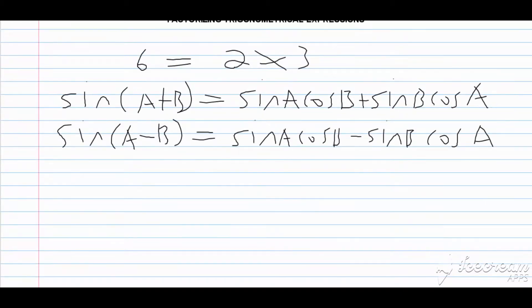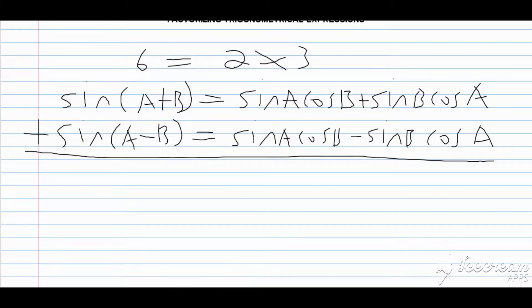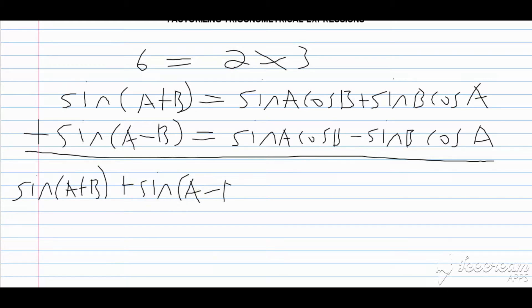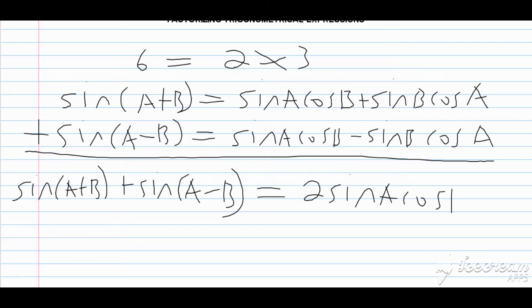So we have two expressions here. Now what if I take the sum of these two expressions — let us say we decide to add them. When I add the left-hand side, I'm going to get sine of A plus B plus sine of A minus B. This is equal to sine A cos B plus sine A cos B, which gives me 2 sine A cos B.